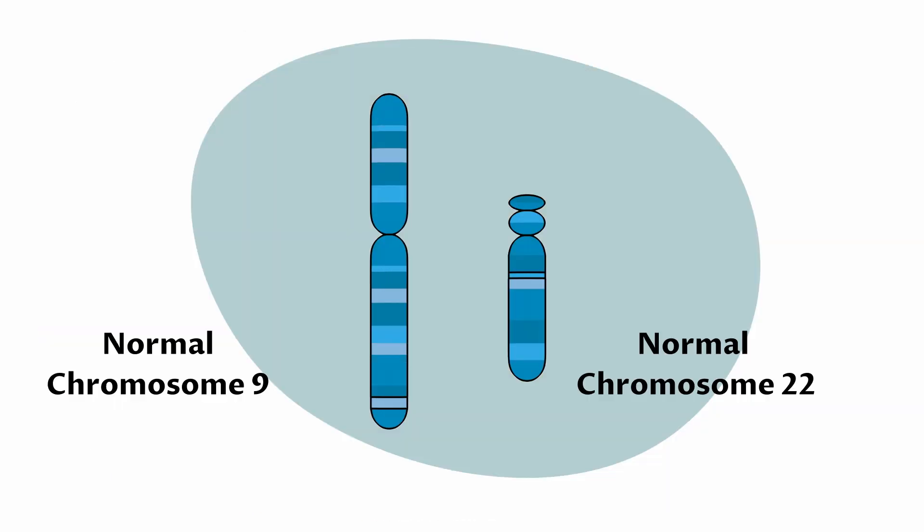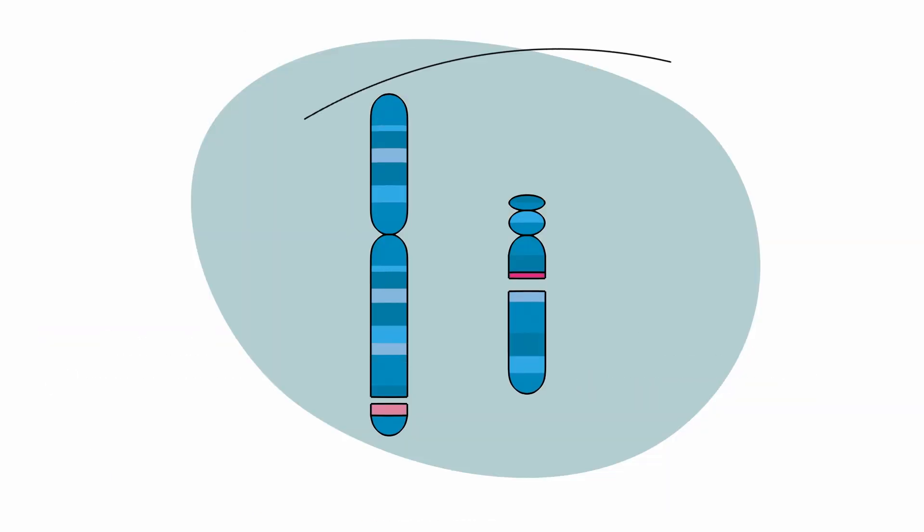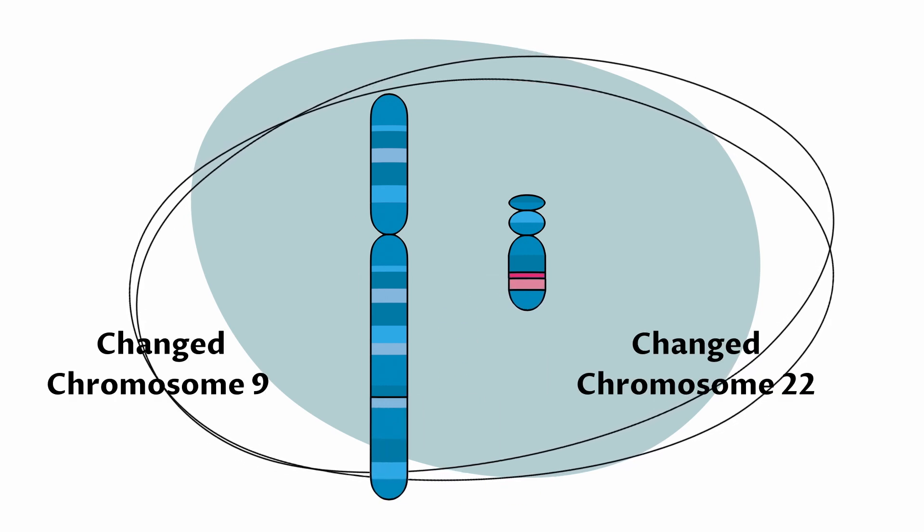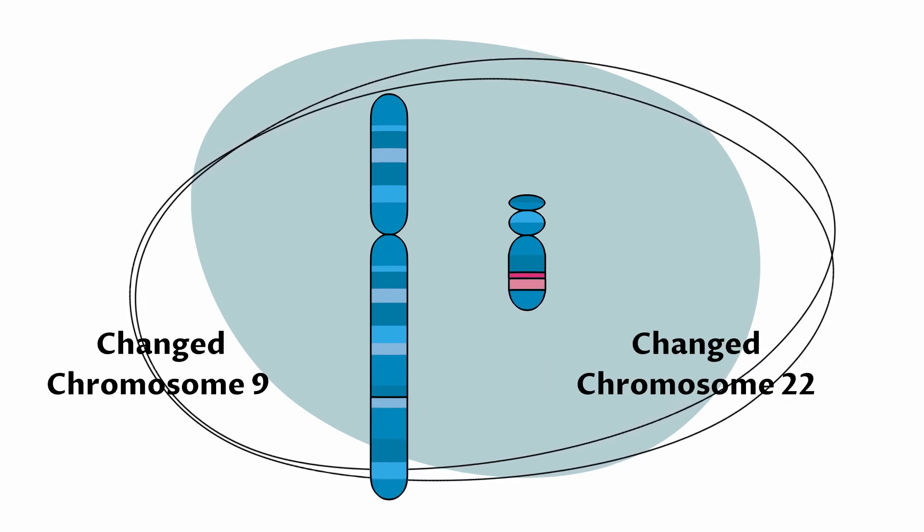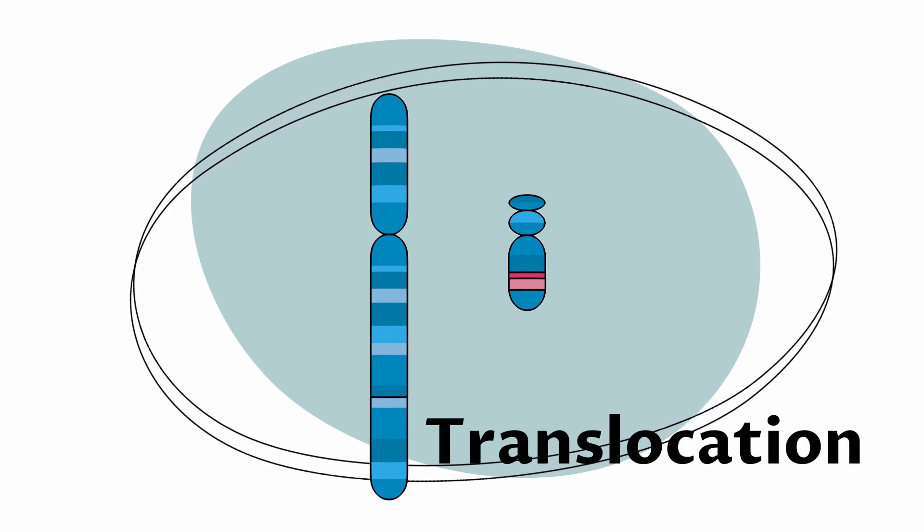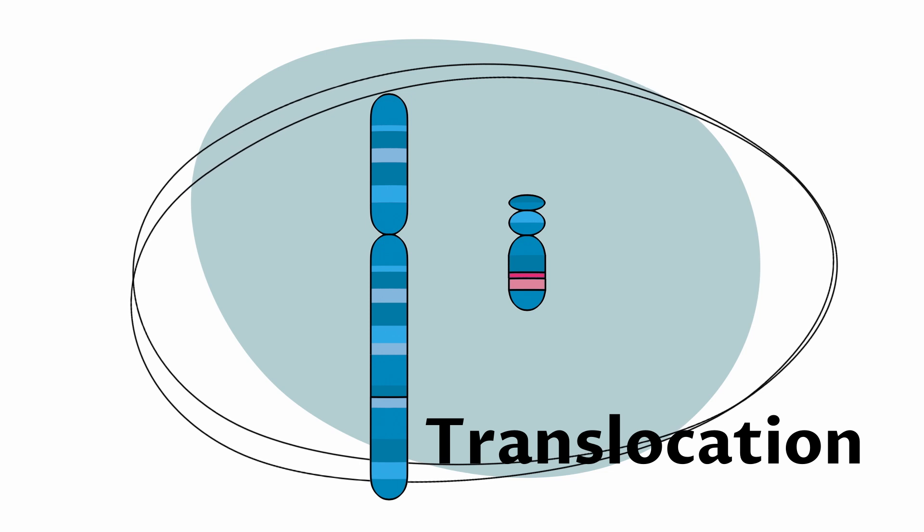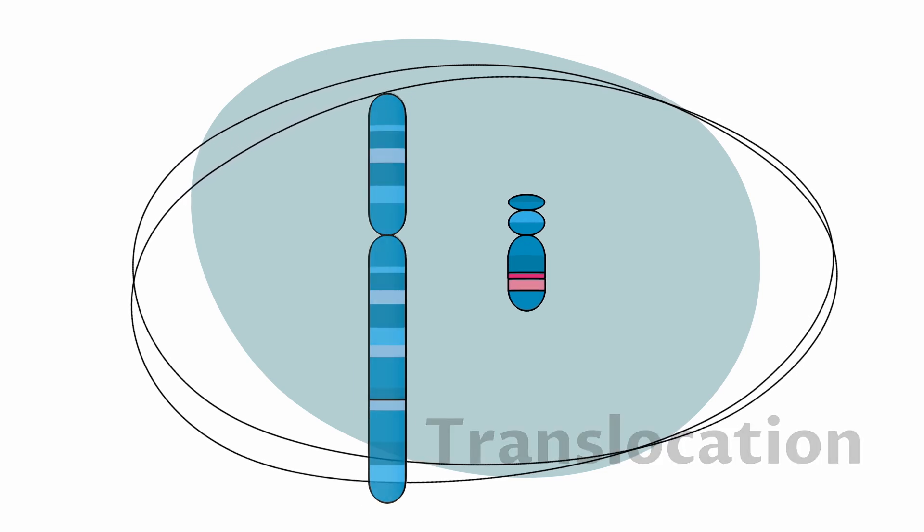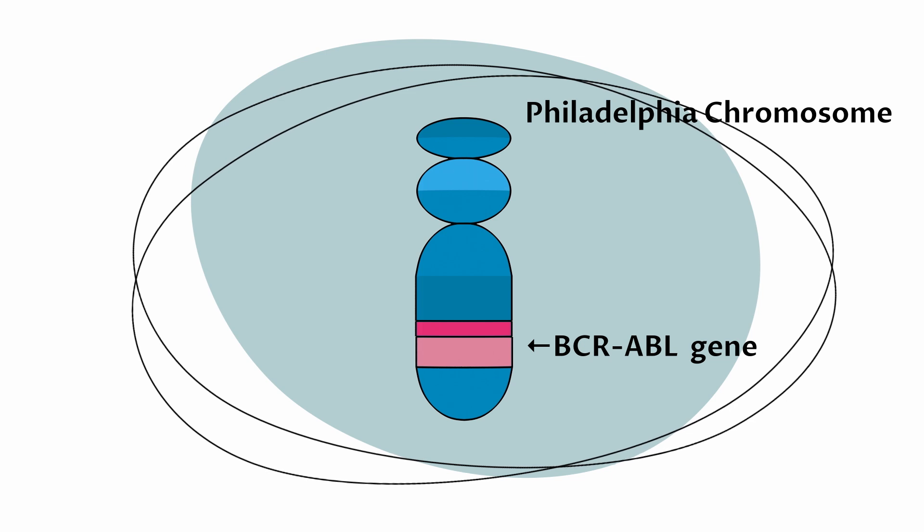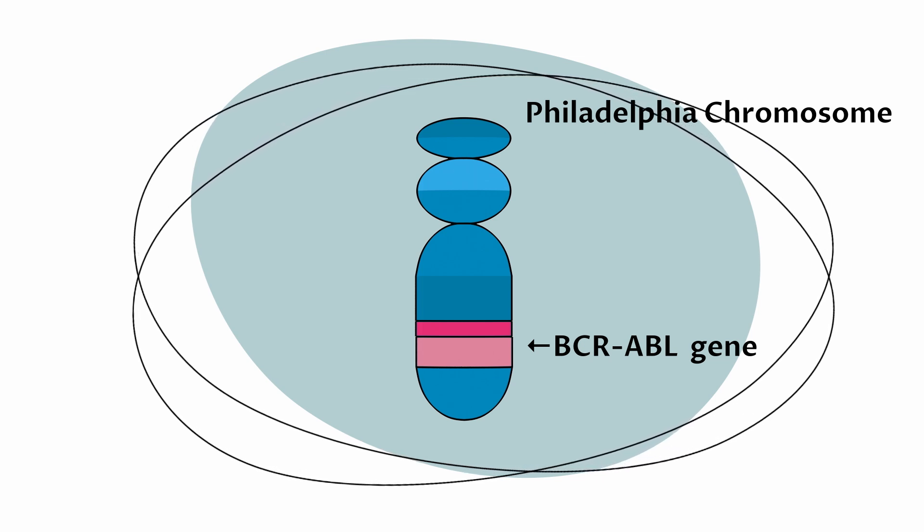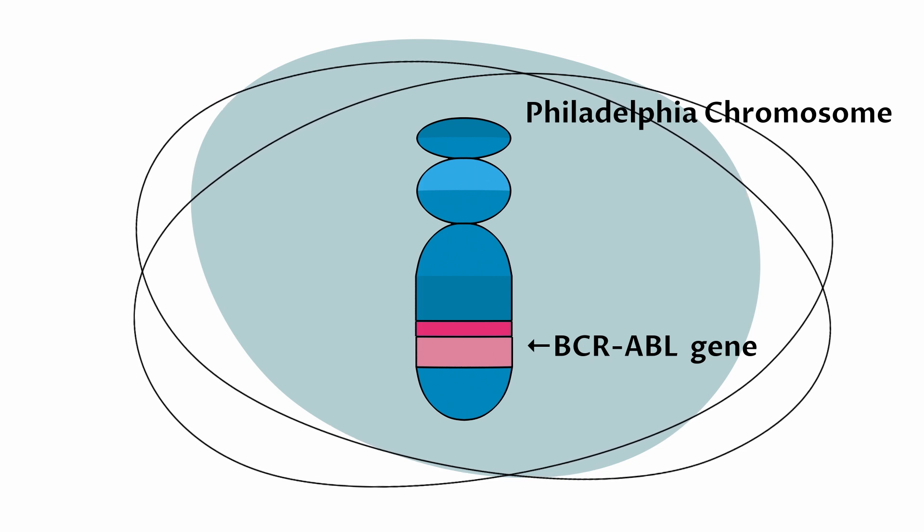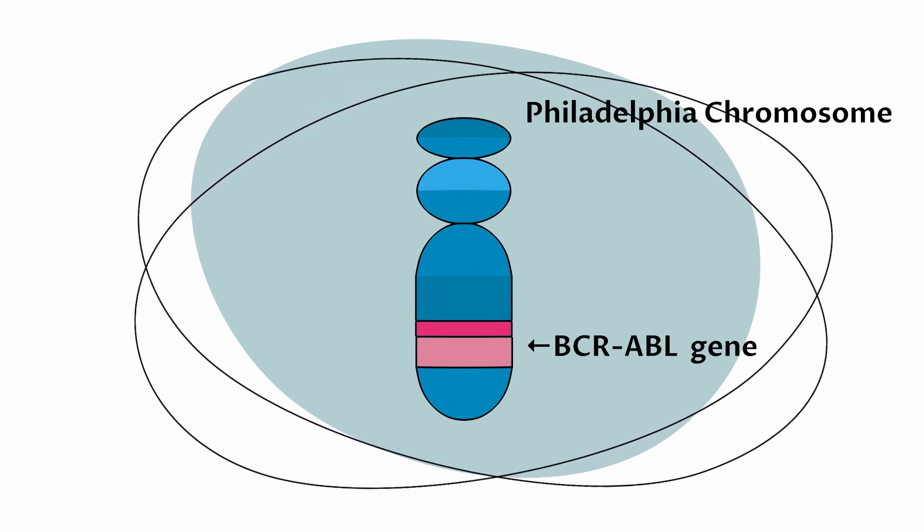In CML, parts of chromosomes 9 and 22 swap sections with each other, creating an extra short chromosome 22 and an extra long chromosome 9. This exchange of parts of chromosomes is called translocation. The changed chromosome 22, which contains a new gene called BCR-ABL, is known as the Philadelphia chromosome and is found in almost all people with CML.